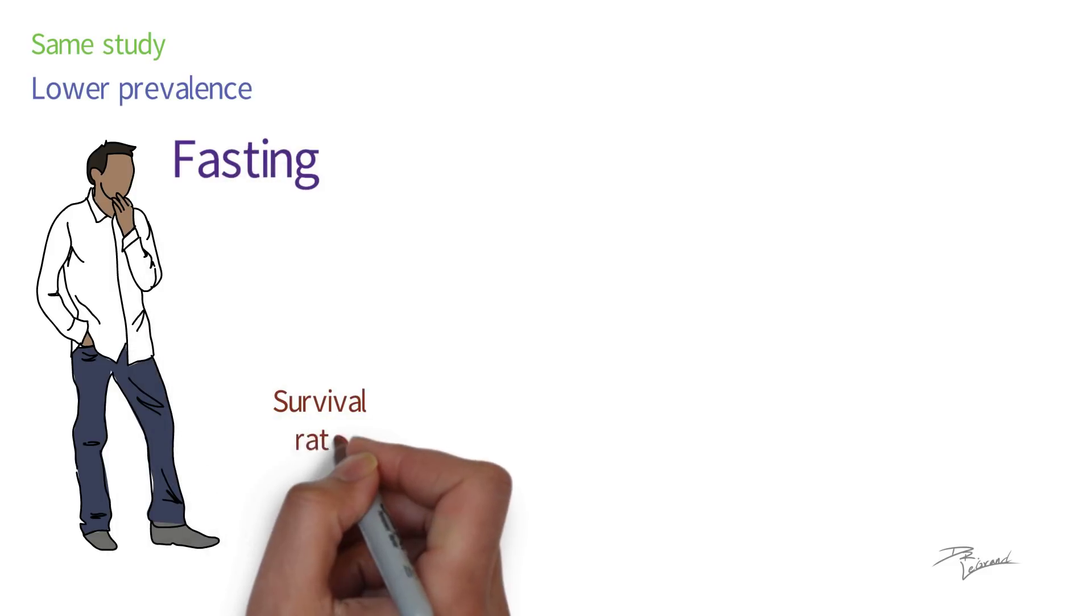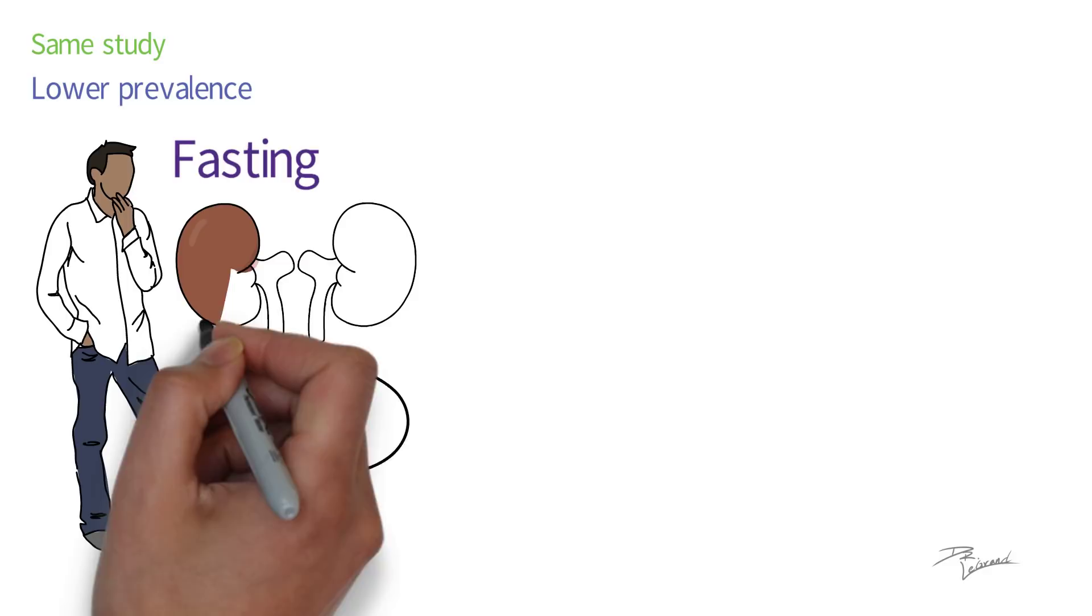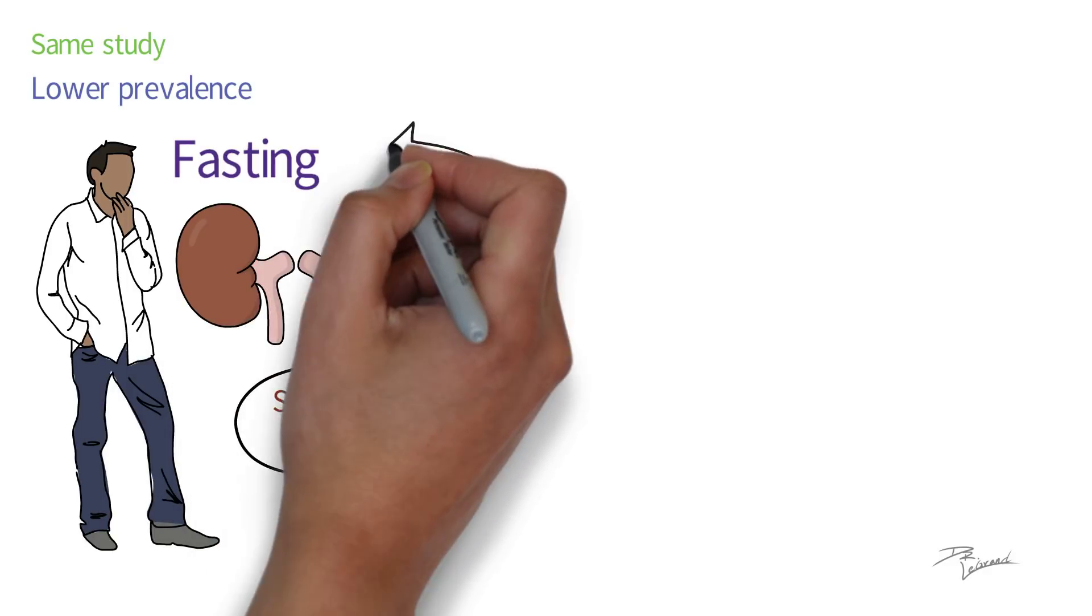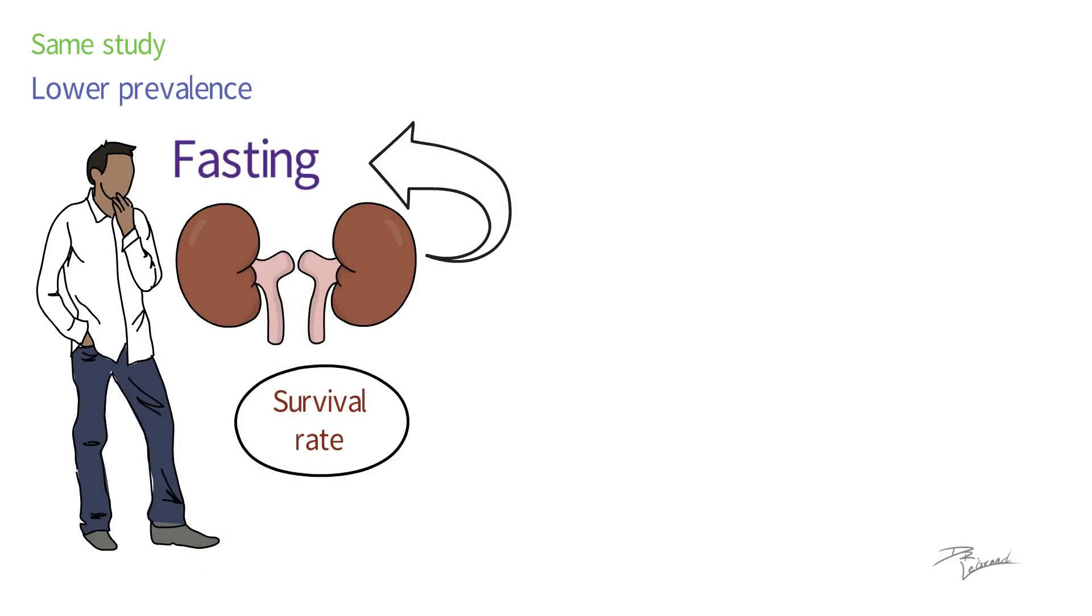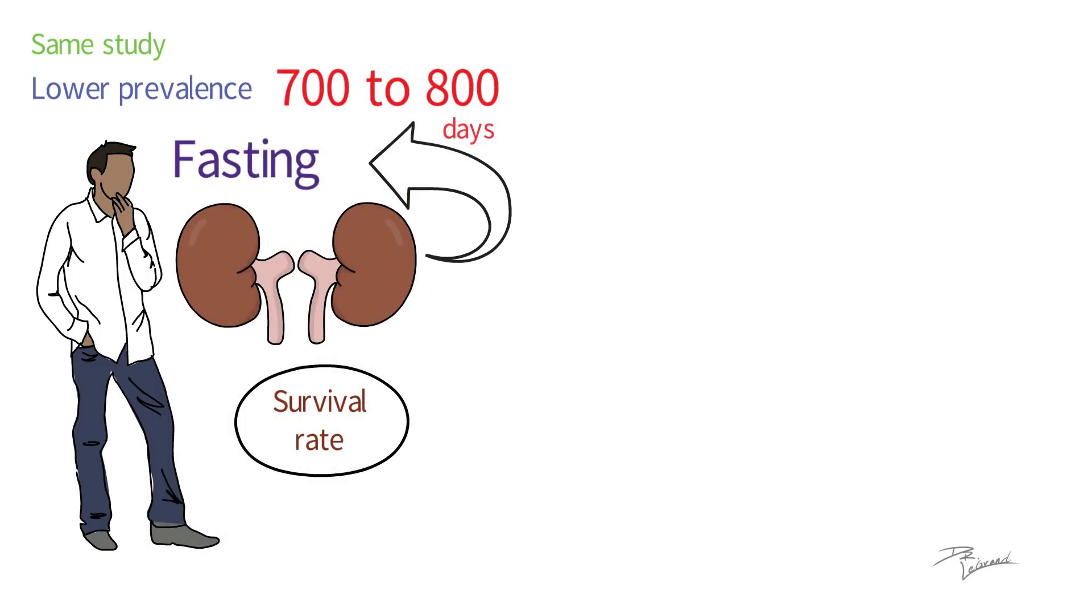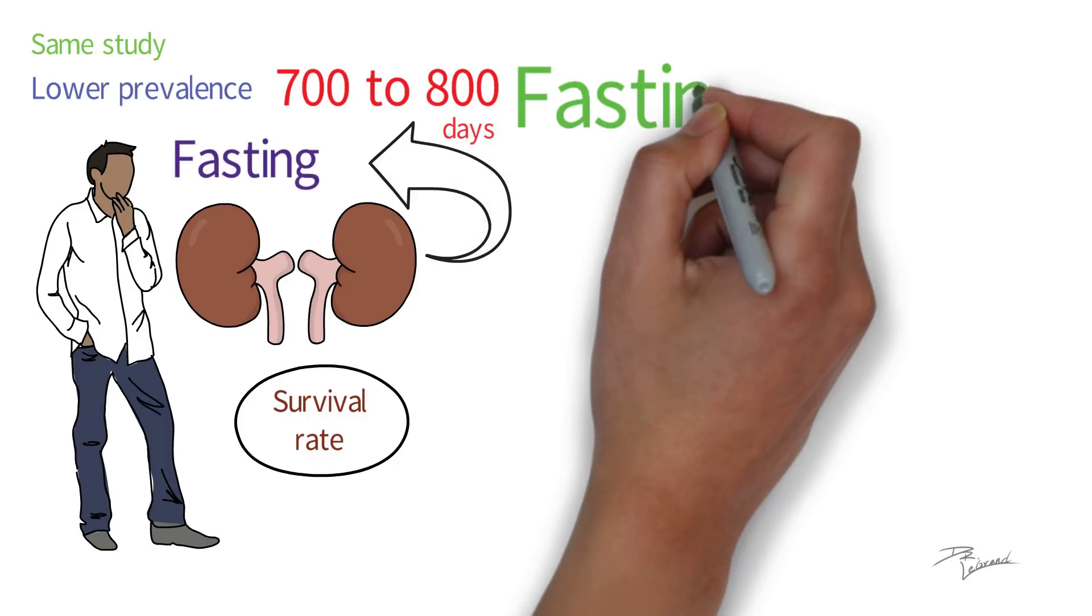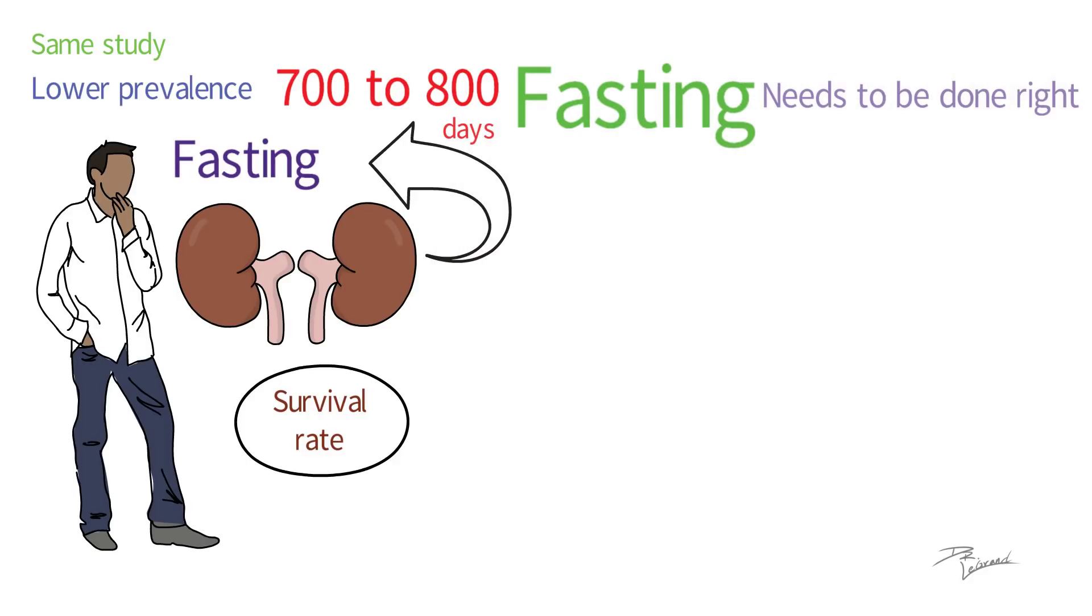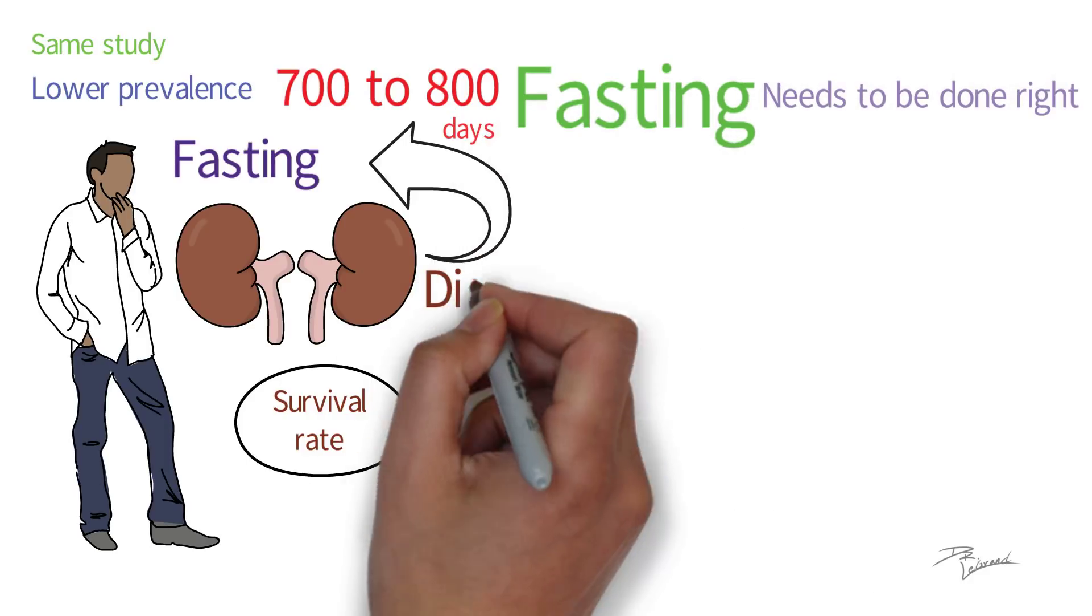The survival rate of individuals with existing chronic kidney diseases who adopt a fasting program may be extended by an average of 700 to 800 days. It is, however, important to note that fasting needs to be done right among individuals with existing kidney diseases.